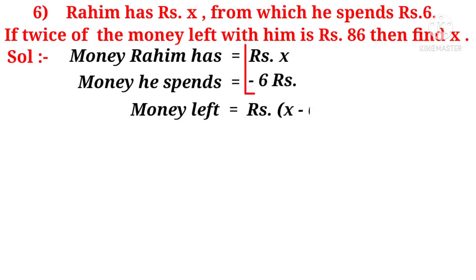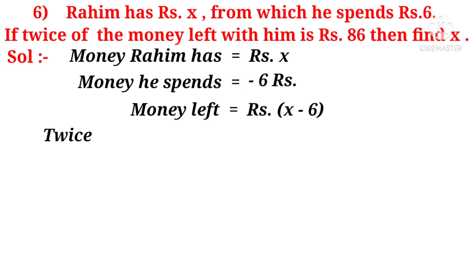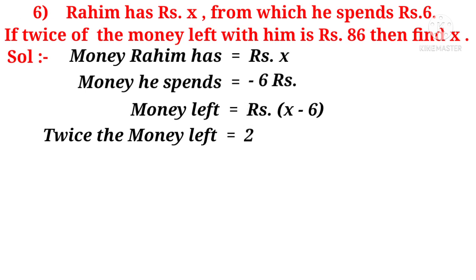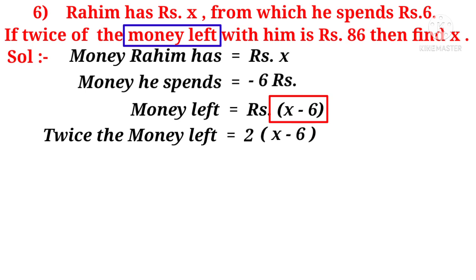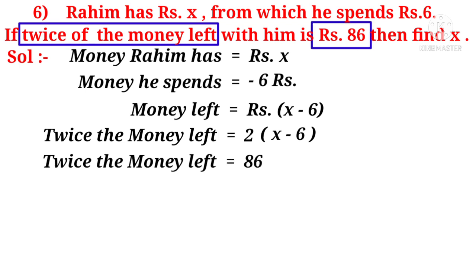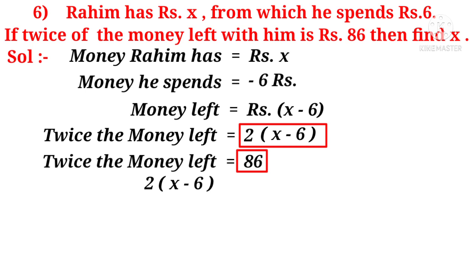Money left with him is equal to X minus 6. Now, twice the money left is equal to — observe the word 'twice', it indicates multiplied by 2. So, 2 into X minus 6. But in the problem, twice the money left is given as 86 rupees. So, 2 into (X minus 6) is equal to 86.